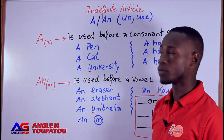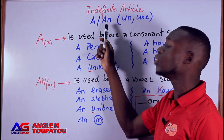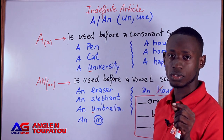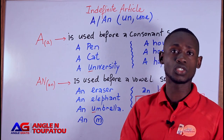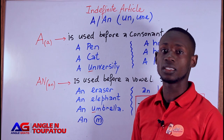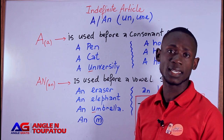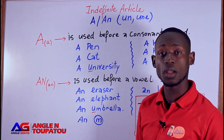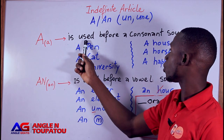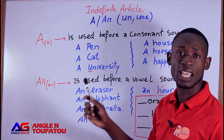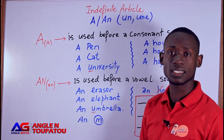Both of these mean the same thing — 'un' or 'une' in French. That depends on the word that follows it. Ça dépend des mots qui suivent. Let's talk about the letter 'A' or 'A'. As I said, it's an article — it's an indefinite article. For example, 'A' is used before a consonant sound.